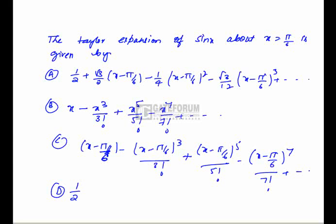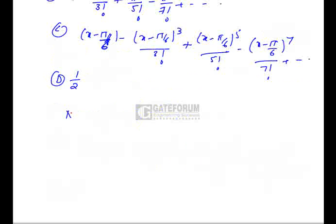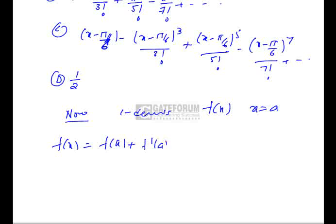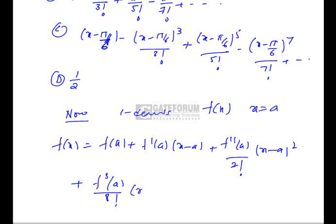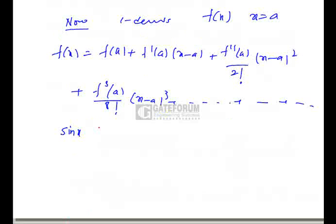In the next problem, we find the Taylor expansion of sin(x) at x equals π/6. The Taylor expansion in one dimension for a function f(x) at x equals a is: f(x) equals f(a) plus f'(a)(x minus a) plus f''(a)/2! times (x minus a)² plus f'''(a)/3! times (x minus a)³ and so on.